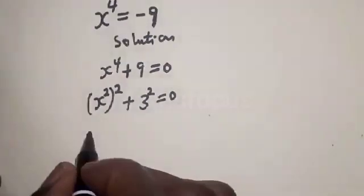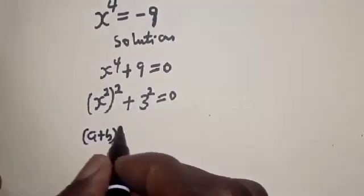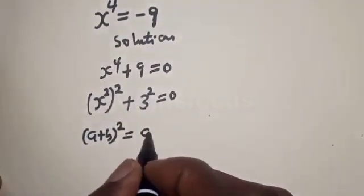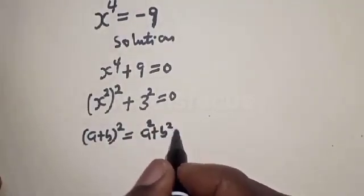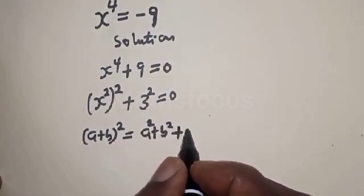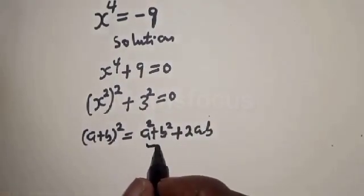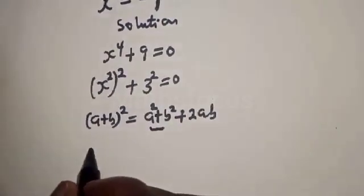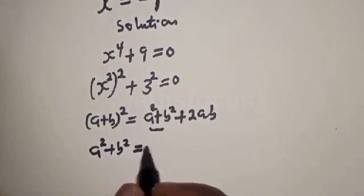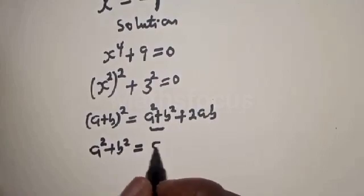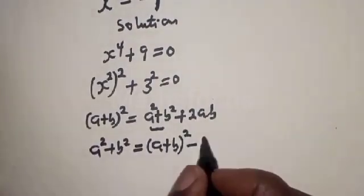Take note of the rule that (a + b)² equals a² plus b² plus 2ab. Now, let's look for a² plus b². Therefore, a² plus b² will be equal to (a + b)² minus 2ab.